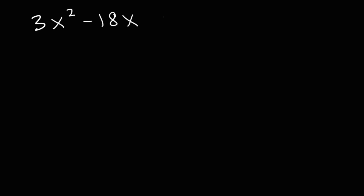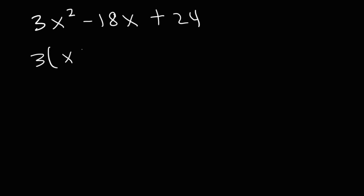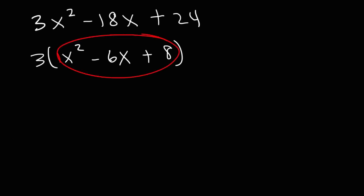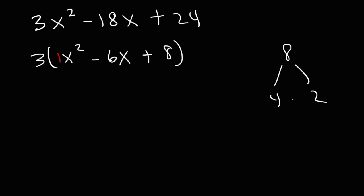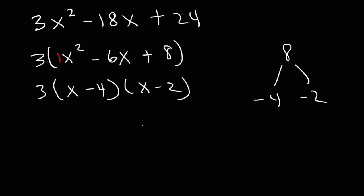Let's factor 3x squared minus 18x plus 24. All coefficients are divisible by 3, so factor out 3: we get x squared minus 6x plus 8. Now find two numbers that multiply to 8 but add to negative 6: that's negative 4 and negative 2. So we replace x squared minus 6x plus 8 with x minus 4 times x minus 2, keeping the 3 in front. That is the answer.